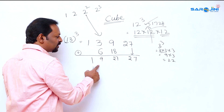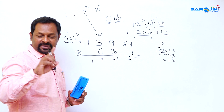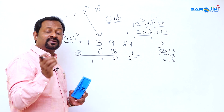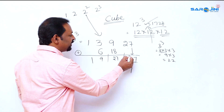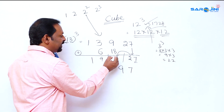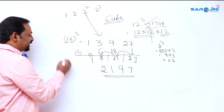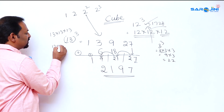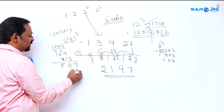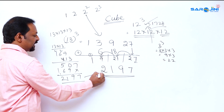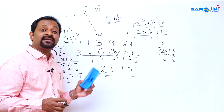After doubling we have: 1, 9, 27, 27 — but the middle numbers are double digits, so we need to apply the balancing rule. Bring down 7, carry 2 and add to 7 to get 9; carry 2 and add to 9 to get 11, carry 1. Final answer: 2197. Verification: 13 × 13 = 169, and 169 × 13 = 2197. Correct!